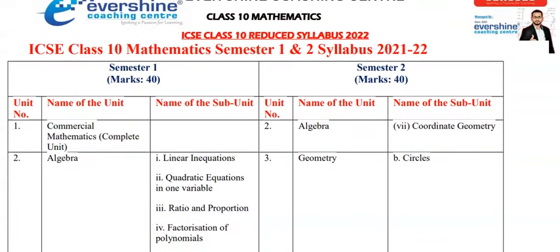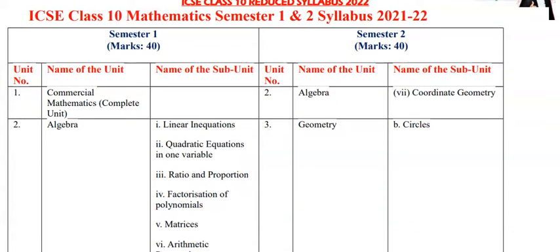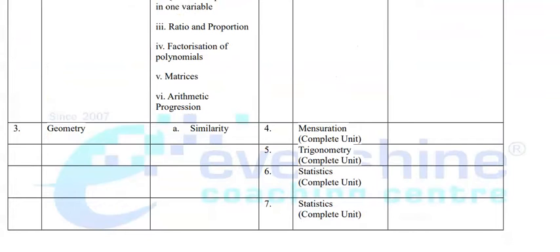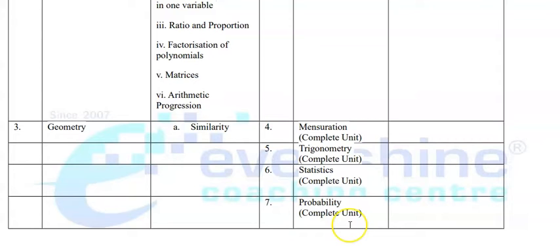When you come to Semester 2, it also carries 40 marks. In Algebra, you are going to study coordinate geometry. In Geometry, you are going to study only circles. Mensuration is a complete unit — you study the complete chapter including all subtopics. Trigonometry is a complete unit, Statistics is a complete unit, and Probability is also a complete unit.